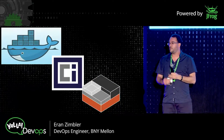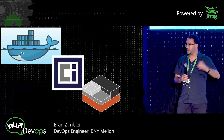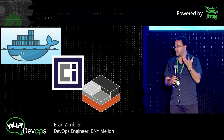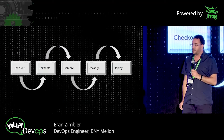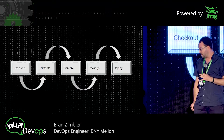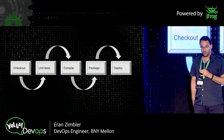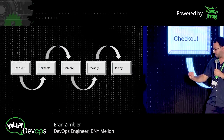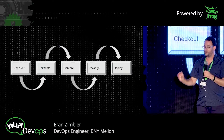Let's talk about a very simple pipeline. We all know what a simple pipeline is: getting the code, building the code, running tests, packaging it, and eventually deploying. We all know how to do it. And the easiest way to do it with containers is basically separating each step or each tool into its own container.